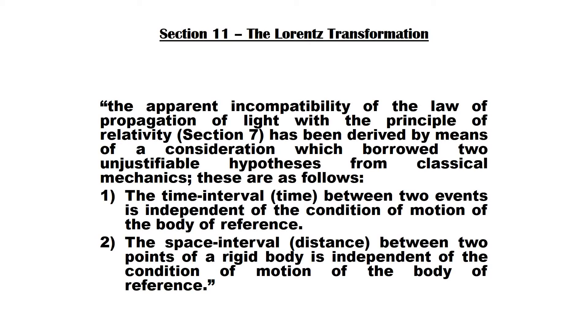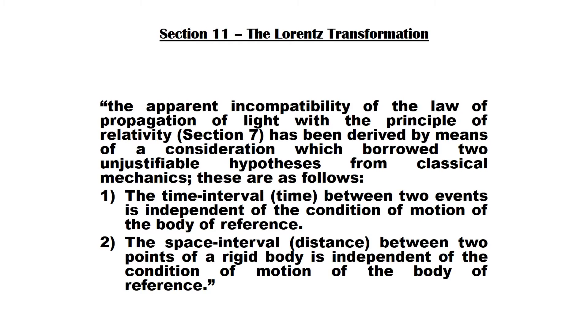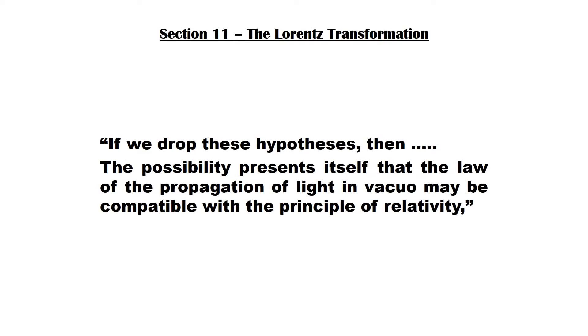Einstein states that the apparent incompatibility of the law of propagation of light with the principle of relativity has come about because we assumed the validity of two unjustifiable hypotheses borrowed from classical mechanics. But if we drop these assumptions, then the possibility presents itself that the law of the propagation of light may be compatible with the principle of relativity. To pursue this possibility, he poses a question whose answer will lead to the formulation of the special theory of relativity.